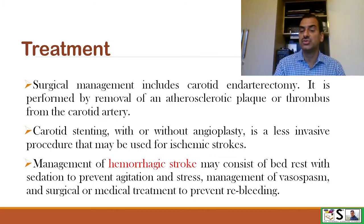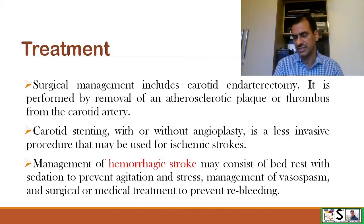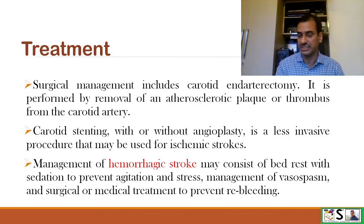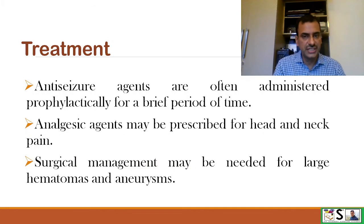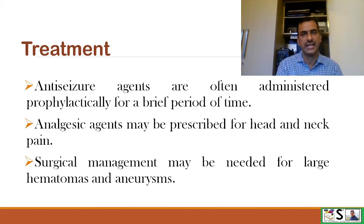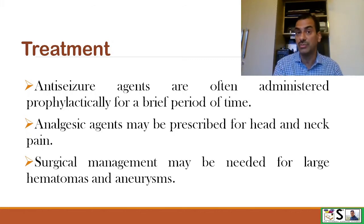Management of hemorrhagic stroke consists of bed rest with sedation to prevent agitation and stress, management of vasospasm, and surgical and medical treatment to prevent re-bleeding. Anti-seizure agents are often administered prophylactically for a brief period. Analgesic agents may be prescribed for head and neck pain, and surgical management may be needed for large hematomas in the brain or aneurysms.